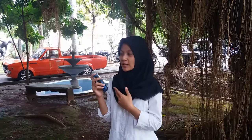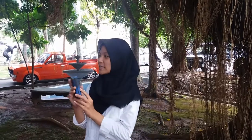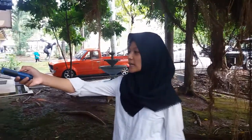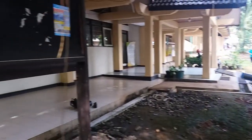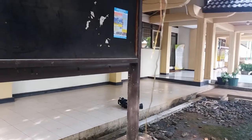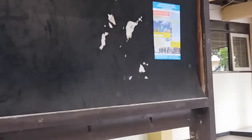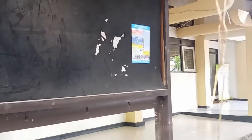Pertama kita tentukan dulu objeknya. Setelah kita tentukan, misalkan di sini kita tentukan objeknya. Kemudian kita tekan tombol mist satu kali. Tombol mist itu sendiri digunakan untuk mengukur sisi miringnya. Hasilnya nanti dapat terlihat di layar pembaca.